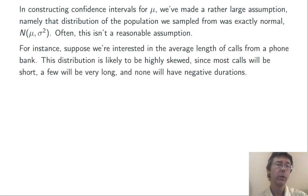For instance, suppose we want to know the average length of calls from a phone bank. The distribution of calls from a phone bank is almost certainly not going to be normal. You're going to have many calls that are going to be short, a few that are very long, and certainly no calls that have negative durations.